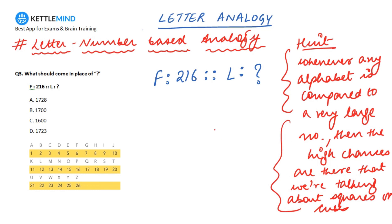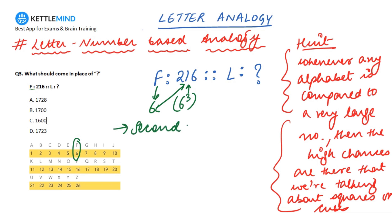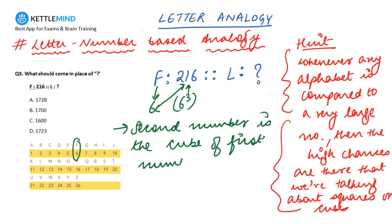In this question F is compared to 216. F as per the alphanumeric series stands for 6. Do we find any relation between 6 and 216? Yes — 216 is equal to 6 cubed. So the relation is: the second number is the cube of the number corresponding to the alphabet as per the alphanumeric series.